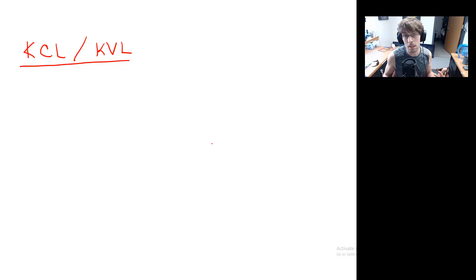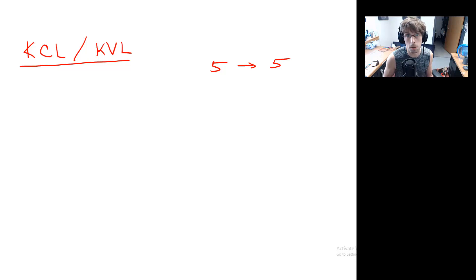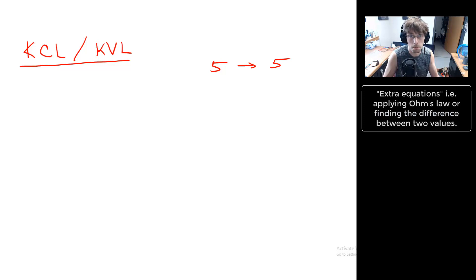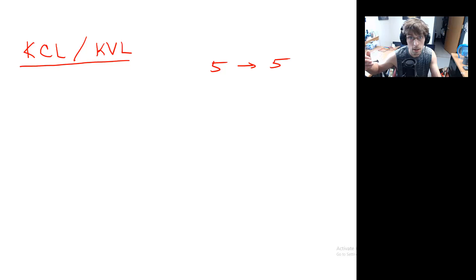All of them end up being equivalent at the end of the day. If you have, for example, five unknowns, you're going to need five equations in order to solve the problem. Using KCL and KVL, that's how we generated those equations. Alternative analysis techniques will still require the same number of equations, but it will sometimes break it down into two steps — you can solve a system of three equations and then do a couple of extra equations to get the other two.